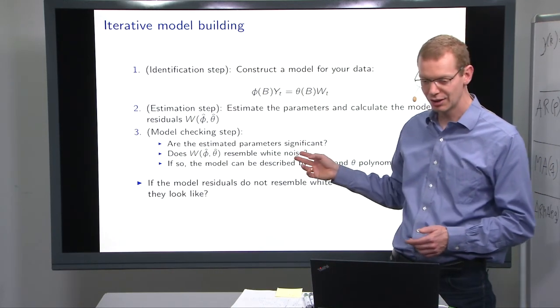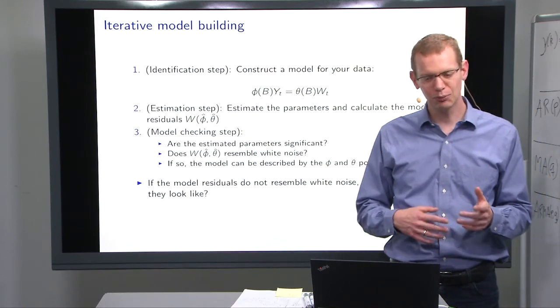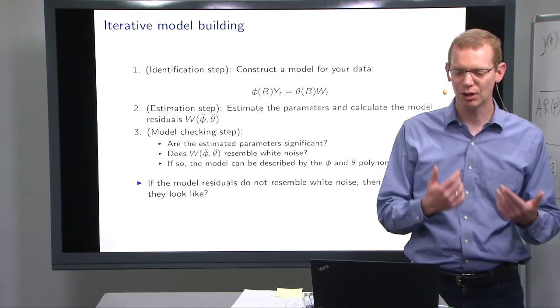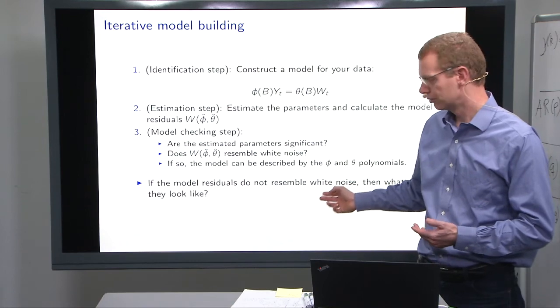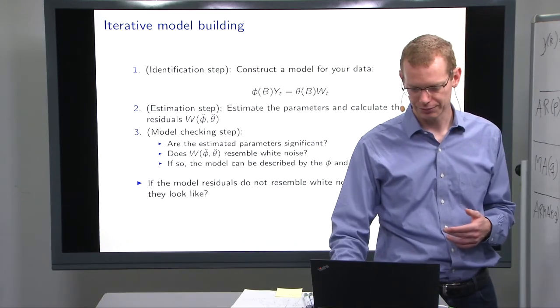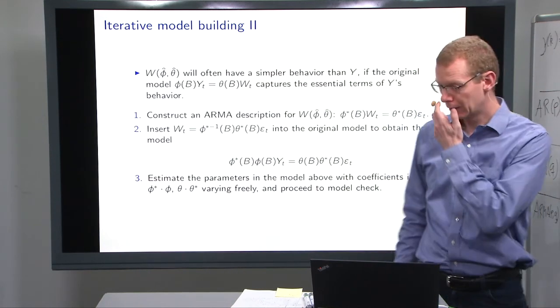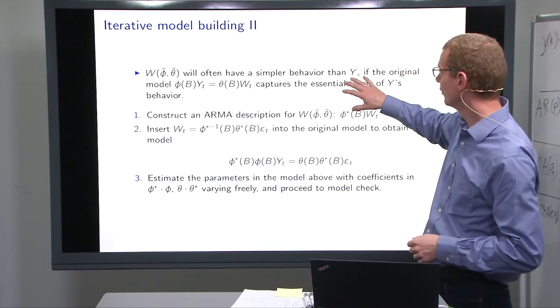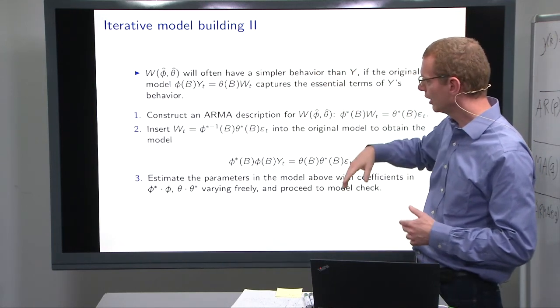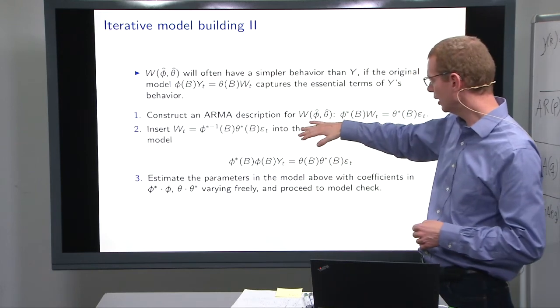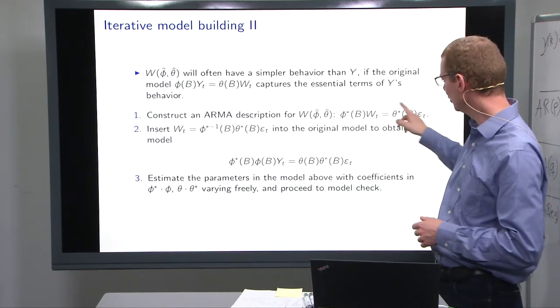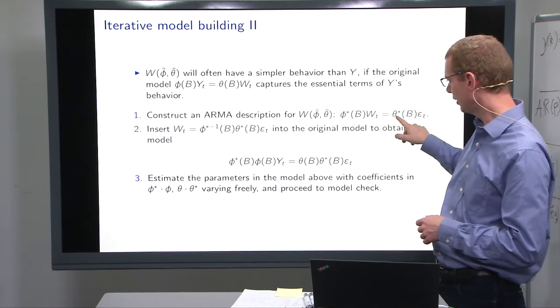If it's not white noise, well, then you can say, what do I need to include in the model to kind of incorporate that? So if I have something, because now it's simpler, then I can make a model for the noise part here and make a new model, the phi star and the theta star.